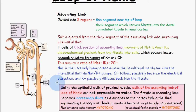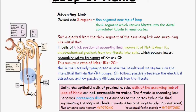Salt is initially going to be ejected from this thick segment of the ascending limb into the surrounding interstitial fluid. In cells of the thick portion of the ascending limb, we have the movement of sodium ions down its electrochemical gradient from the filtrate into the cells. Sodium ions move from a region of more positive charge, which is the filtrate, into the cells of the ascending limb, which are less positive in comparison.